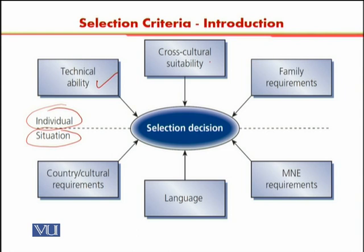The second aspect is cross-cultural suitability — whether that person would be suitable in a cross-cultural context, whether they are capable enough and flexible enough, and whether there is similarity between the cross-cultural contexts. The third individual factor is family requirements, which is also very important. If the family is not ready to move or they have certain limitations, then that is going to be a difficult situation.